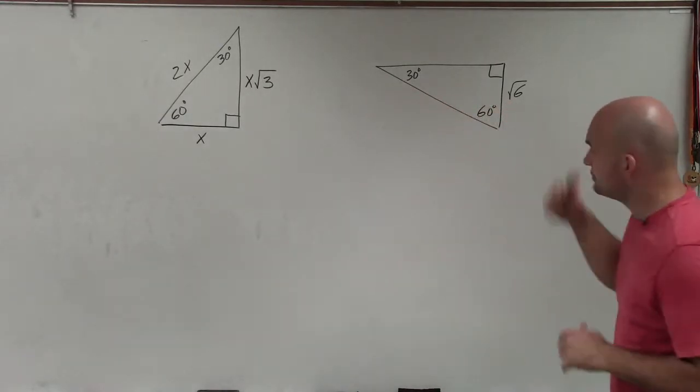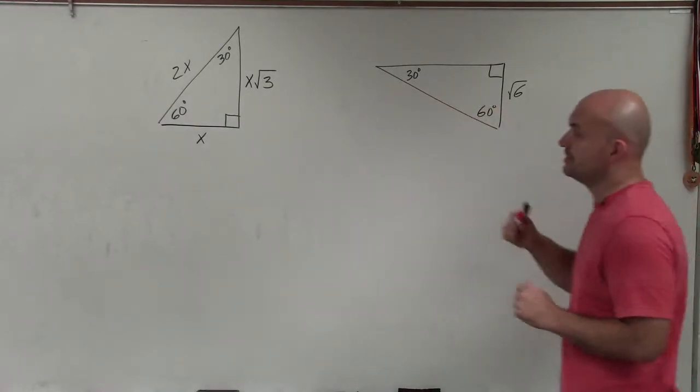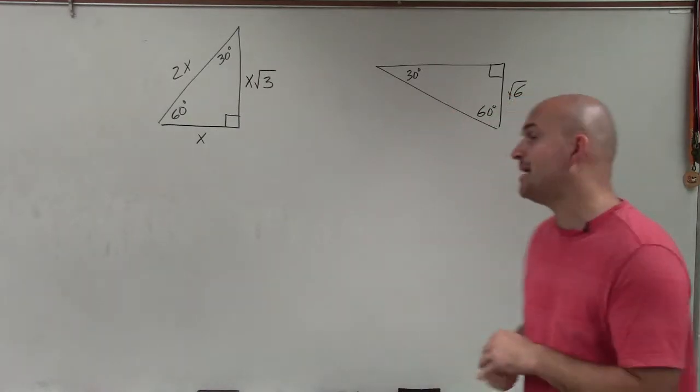Welcome, ladies and gentlemen. So what I have in this case is a 30-60-90 triangle, and I'm given the short leg. And what I'd like to do is find the long leg as well as the hypotenuse.